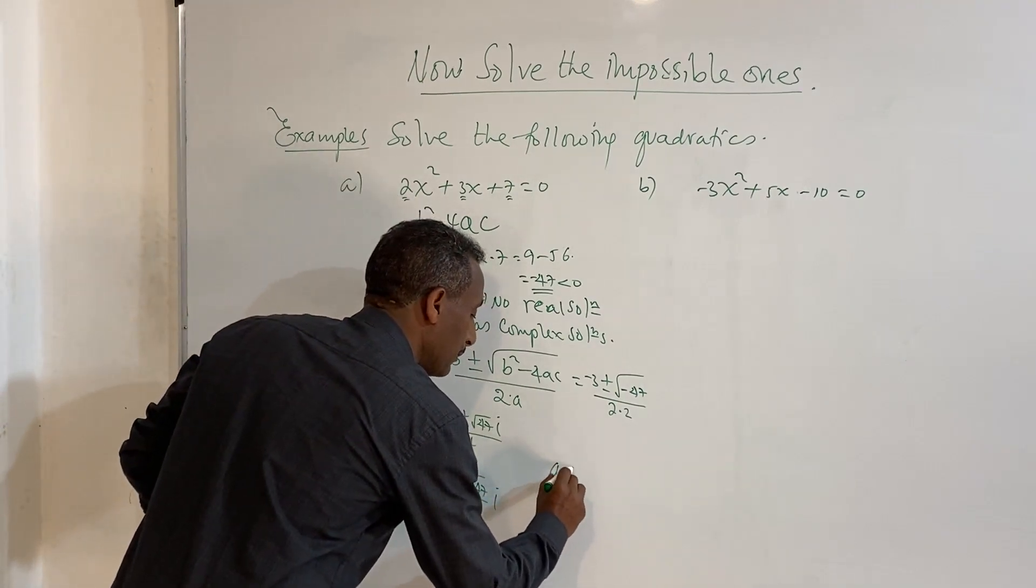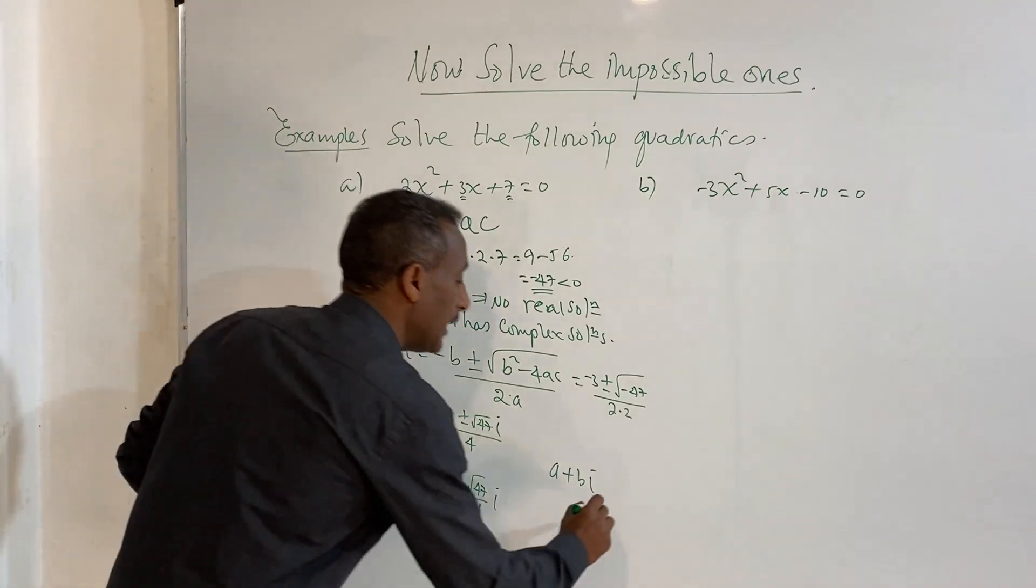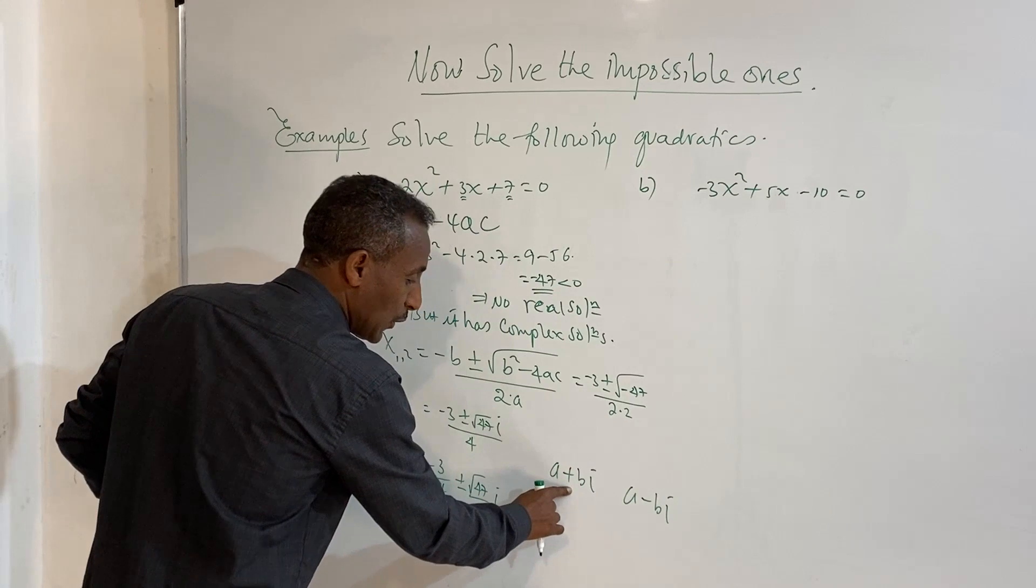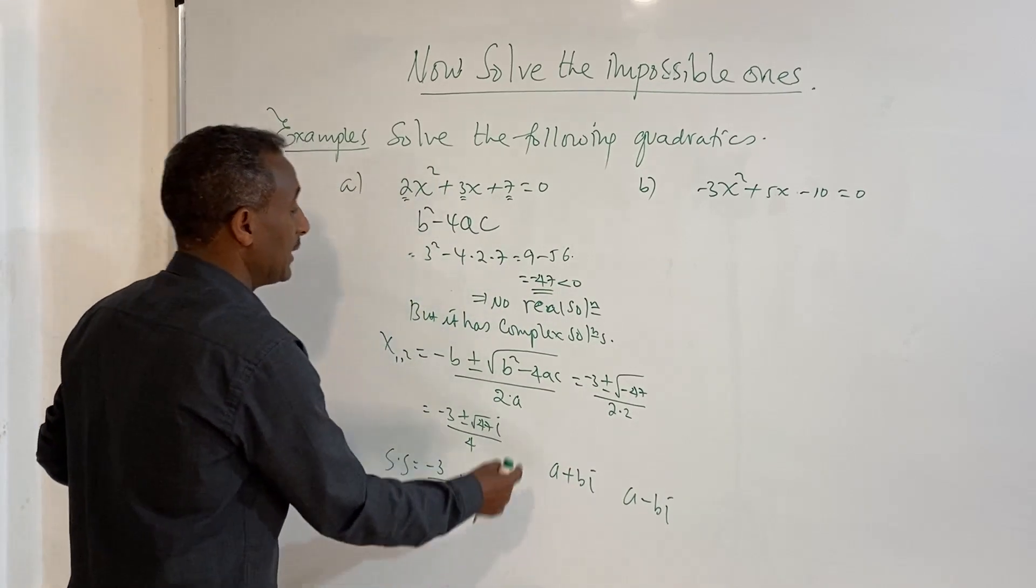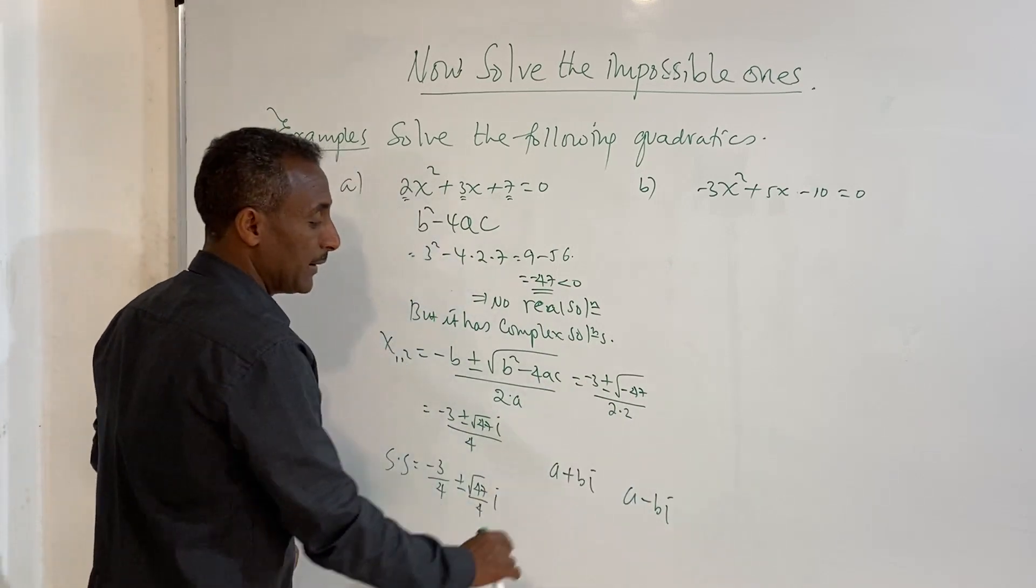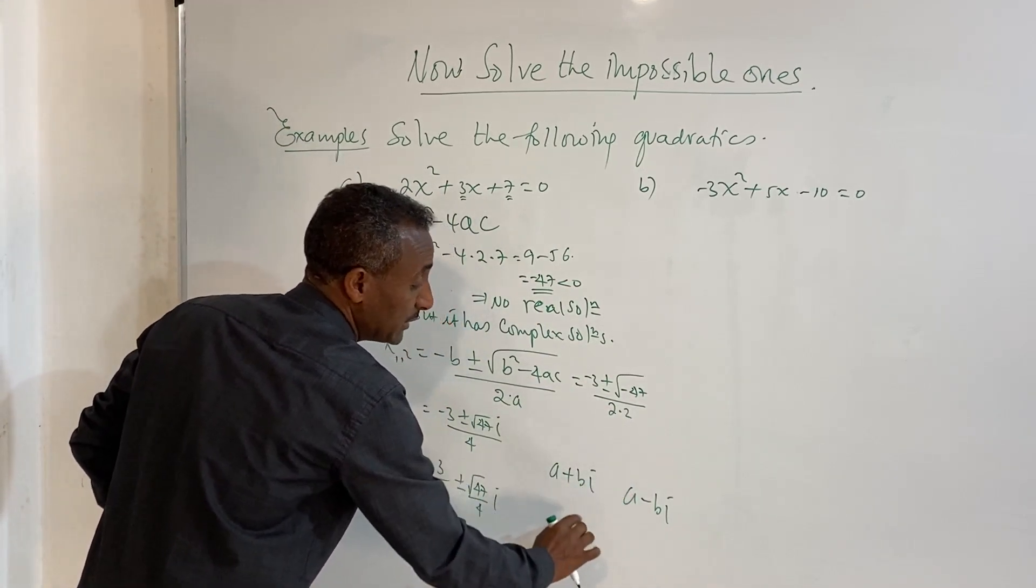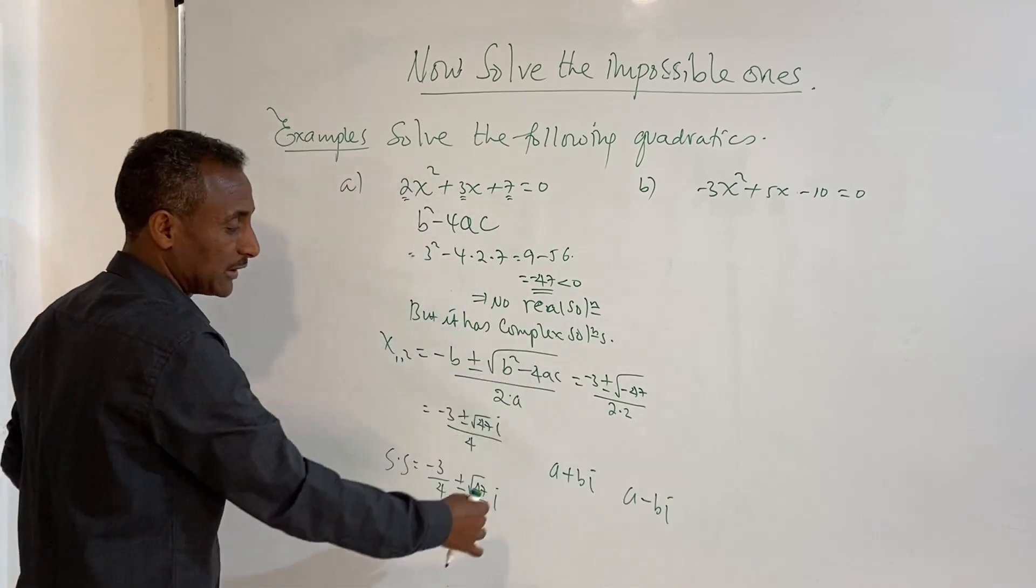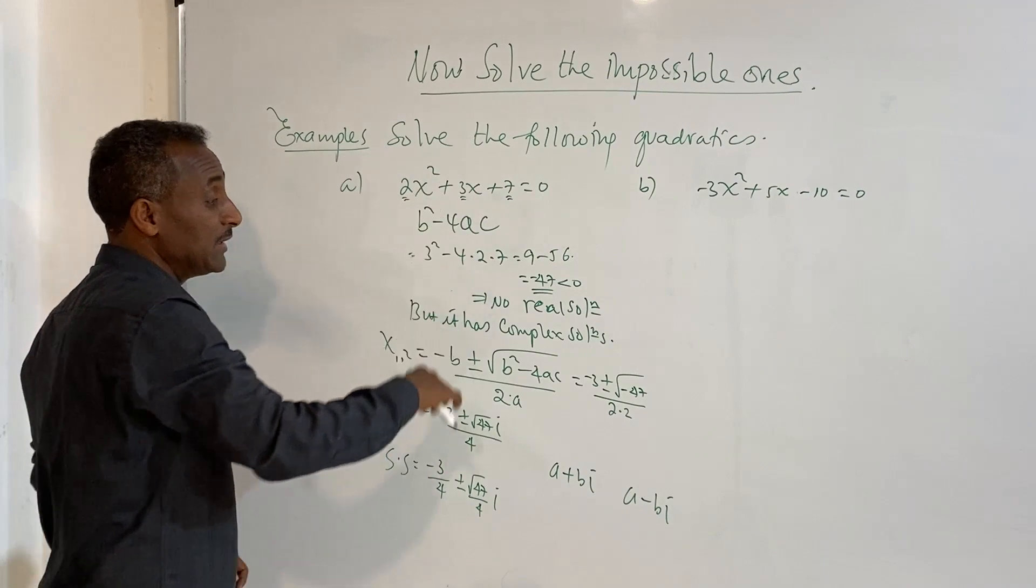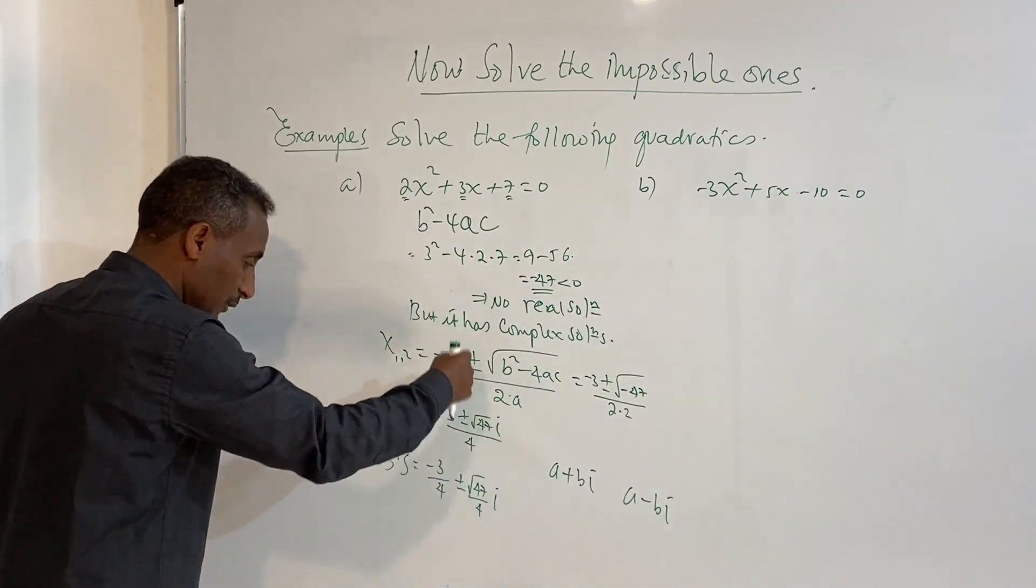The last step is minus 3 over 4 plus or minus square root of 47 over 4 i. And then now, if a plus bi is the solution, a minus bi is also the solution.